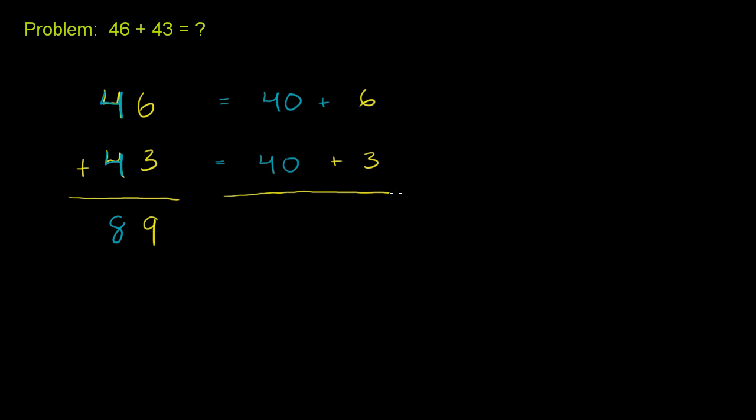And so when you add them, when you add a 6 plus a 3, you get a 9. And when you add a 40 plus a 40, you get an 80. So you get 80 plus 9, which is 89.